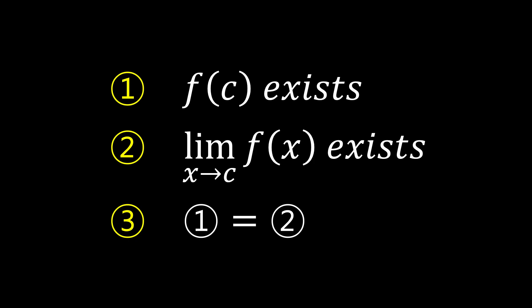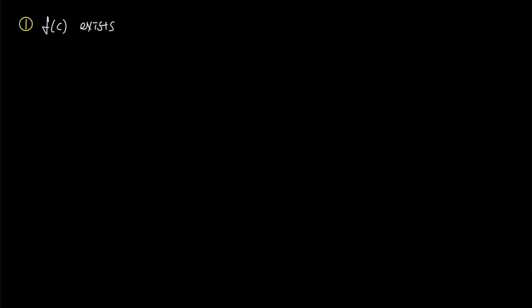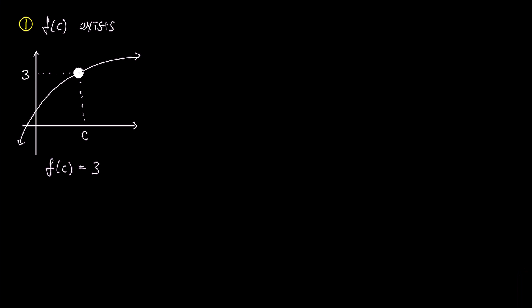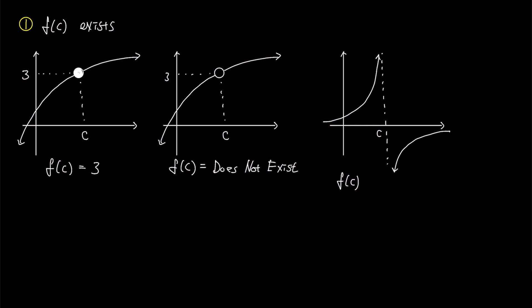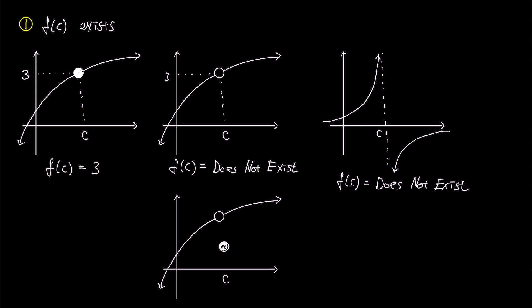Now let's dive into more specific explanations for various cases. For the first condition — existence of f(c) — in this graph, f(c) is represented by the solid circle and its value is 3, so f(c) exists and equals 3. In another graph, the value is represented by an empty circle, indicating f(c) cannot have any value. There is also a case with a vertical asymptote at x equals c, meaning f(c) does not exist. In the last graph, although the solid circle is located outside the main curve, there is still a filled circle indicating f(c) exists and equals 1.